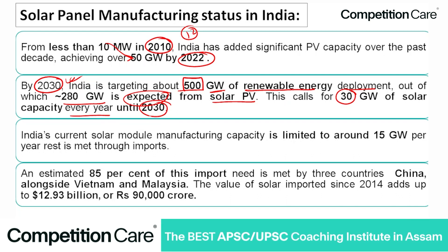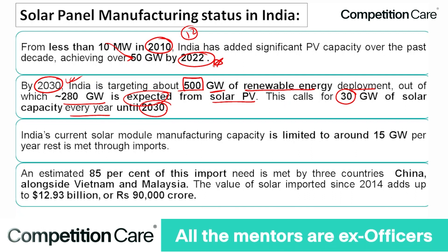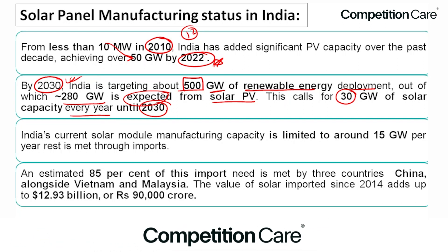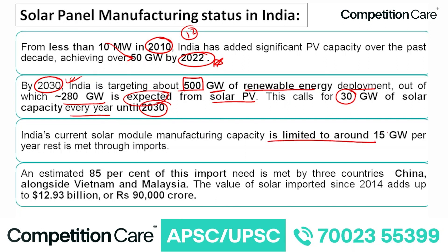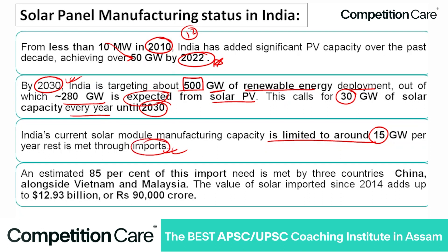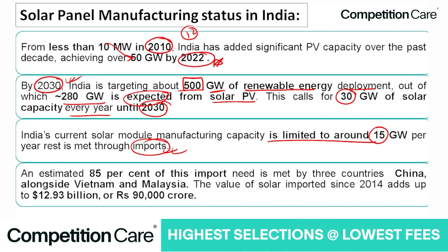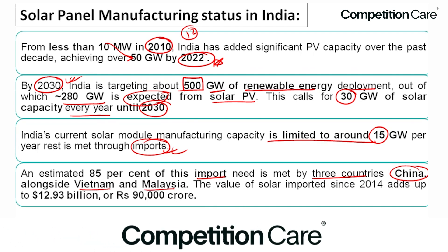As of now, we have achieved 50 gigawatts by 2022. India's current solar module manufacturing capacity is limited to around 50 gigawatts per year; the rest is met through imports. An estimated 85 percent of this import need is met by three countries: China, alongside Vietnam and Malaysia.